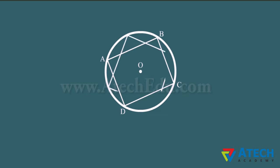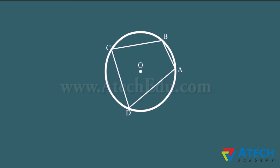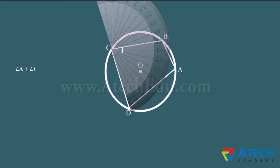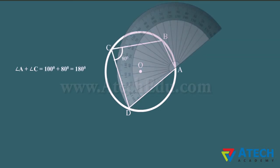Let us consider a cyclic quadrilateral ABCD. Upon measuring, we find that opposite angles angle C measures 80 degrees, while angle A measures 100 degrees. The sum of angle A and angle C is 180 degrees.